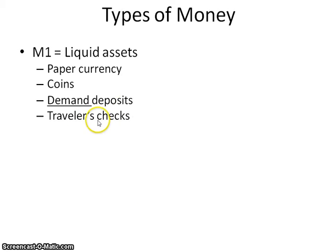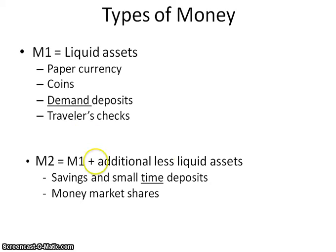People don't use traveler's checks as much anymore because they now have debit cards, so they don't have to carry around as much cash. The other type is M2, which is M1 plus additional less liquid assets. The big one here is your small time deposits, like your savings account. Technically, banks don't have to give you the money immediately — if you look at the fine print, they usually have around 30 days before they have to withdraw all the money you're asking for.